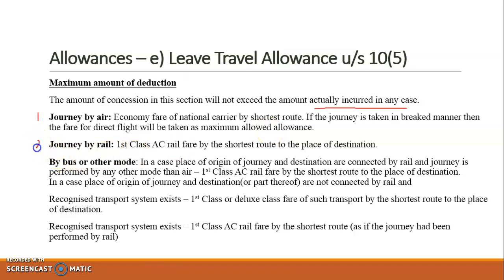For journey by rail, the maximum deduction is the first class AC rail fare by the shortest route to the place of destination. Whether your actual ticket price is less or more, that is the ceiling. For bus or other modes: if the place of origin and destination are connected by rail and the journey is performed by any mode other than air, then the maximum deduction is again first class AC rail fare by the shortest route to the destination.